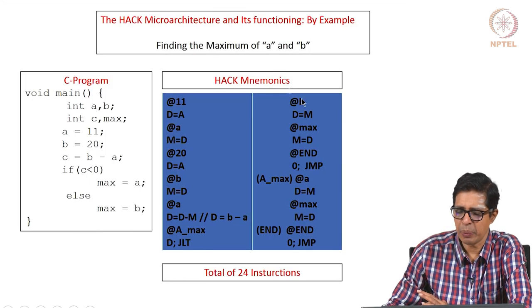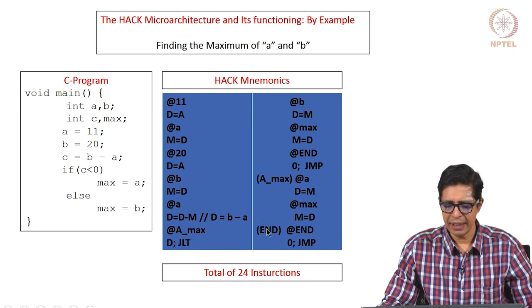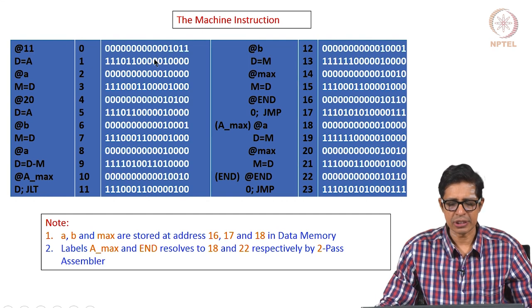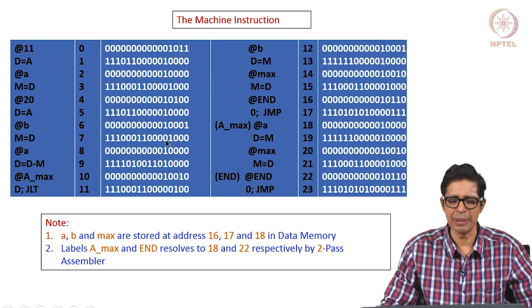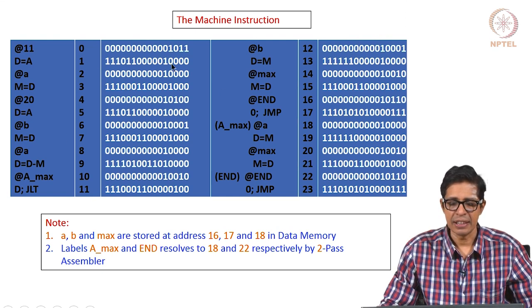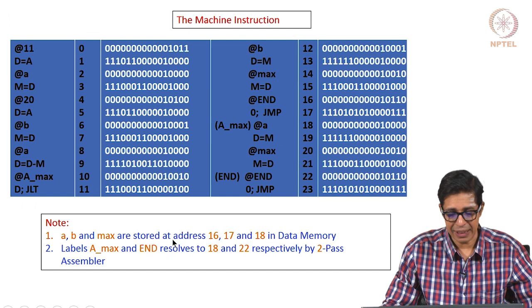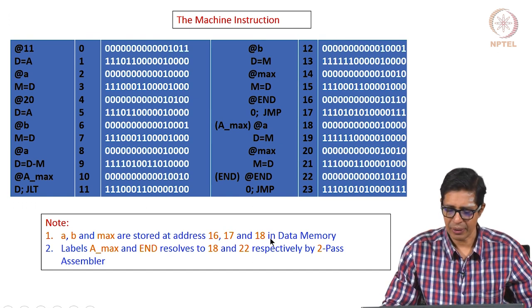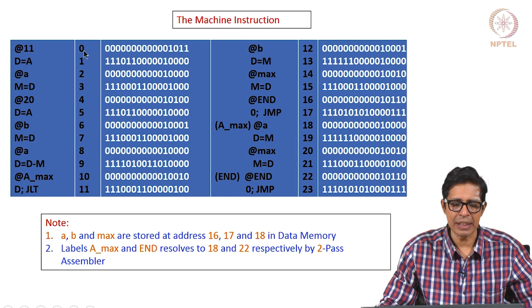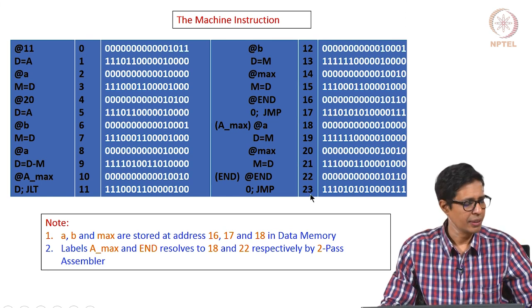The corresponding HACC code has 24 instructions. The memory is 16 bits, so these are 16-bit instructions stored from address 0 to 23. We also assume that A, B, and max are stored in the data memory at locations 16, 17, and 18, while the instructions are stored in instruction memory from 0 to 23.